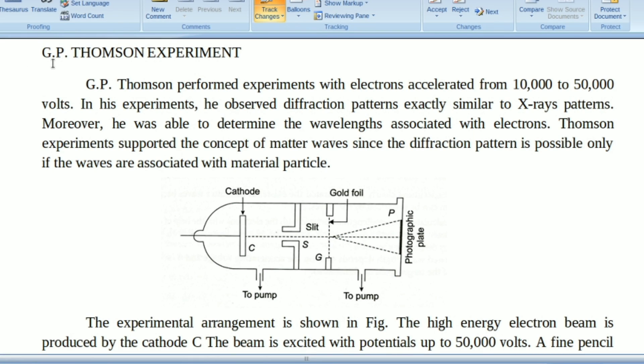Today I am going to discuss the G.P. Thomson experiment. This topic belongs to quantum mechanics and is a very easy concept. G.P. Thomson performed experiments with electrons accelerated from 10,000 to 50,000 volts. In his experiments, he observed diffraction patterns exactly similar to X-ray patterns.